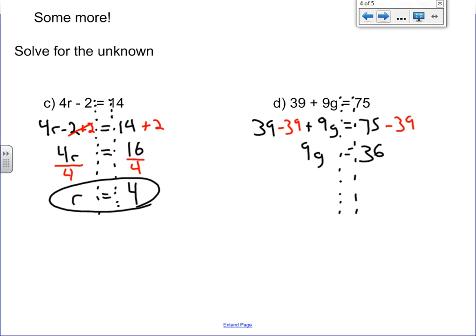So again this looks like a lot of what we're doing in our other example. Since we have 9 times g we want to divide by 9 on this side, divide by 9 on this side. Again if it doesn't make sense go check out the other video and it should help you out.